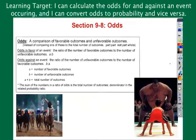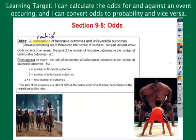They both have to do with the number of ways something can happen. However, there is a slight difference. Notice a couple words to highlight here in your definitions. Odds is a comparison — think ratio. A ratio of favorable to unfavorable. When you see favorable or unfavorable, think number of ways it could happen and number of ways it will not happen. This is part to part.